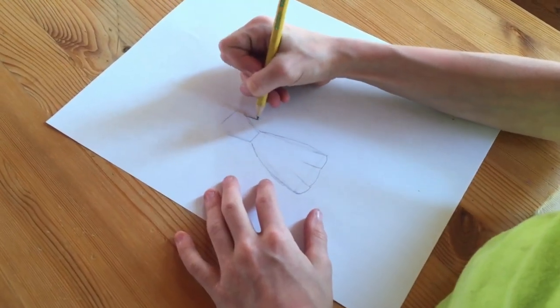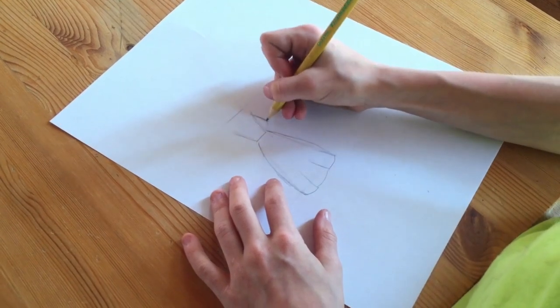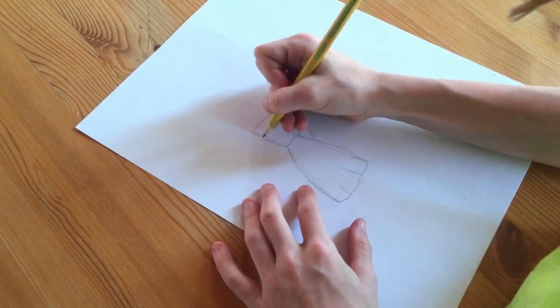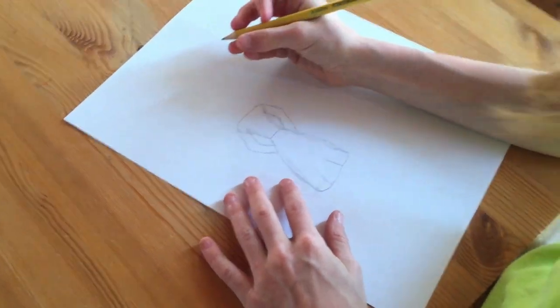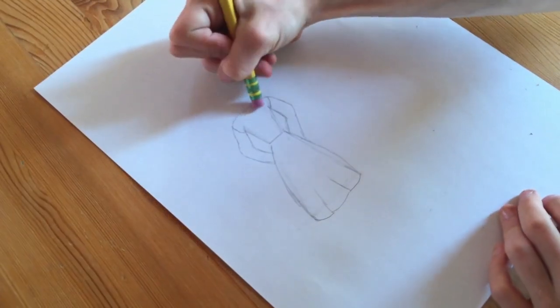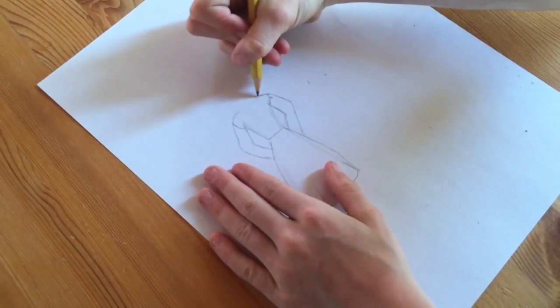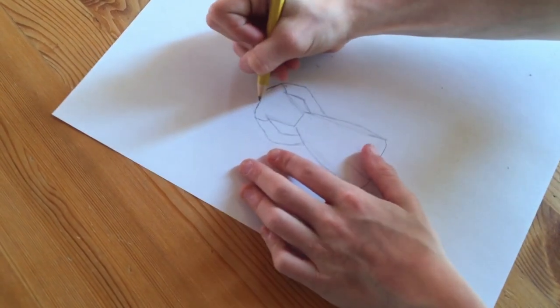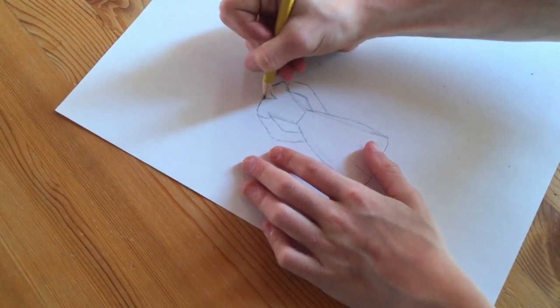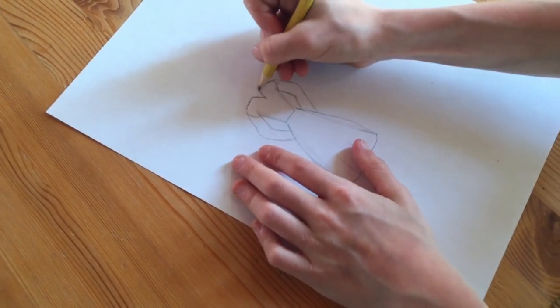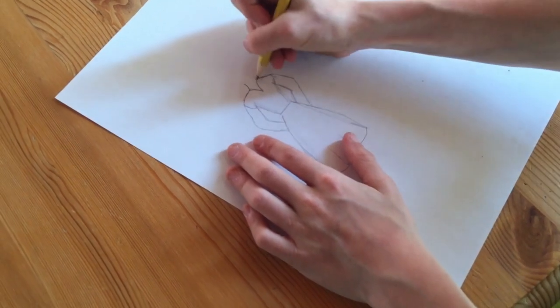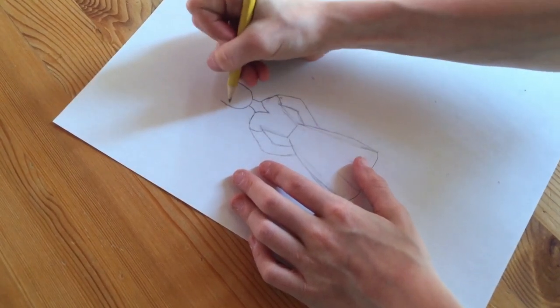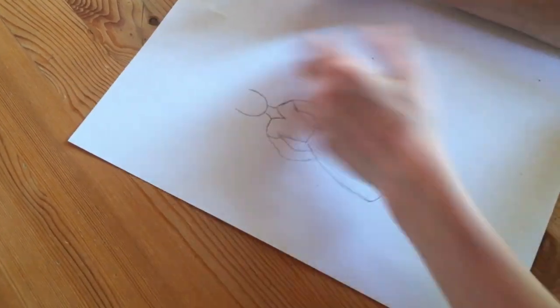Now you can make the arms whatever you want. I want to make mine be behind her back. So you can erase this part a little bit to make it more curved so it's more like shoulders. And then make that little part and the neck and head, and then we'll go on to the face in the next step.